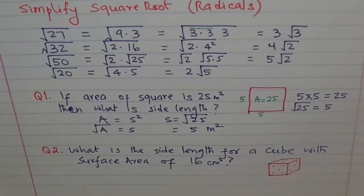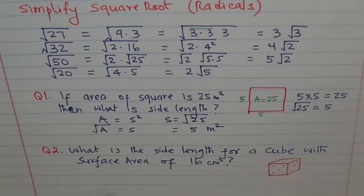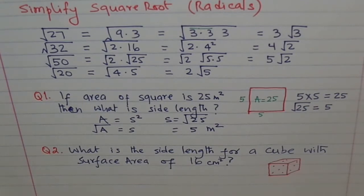I hope you understand today what is square root, how it is applied, how to find square root of a number, and how to simplify expressions with square root. Square root is a form of radical — we haven't really gone into details of radical, but there will be a couple more lectures and videos which will make this point very clear. Enjoy this, try to work out the problem given to you, and we will see you in the next video. Thank you.